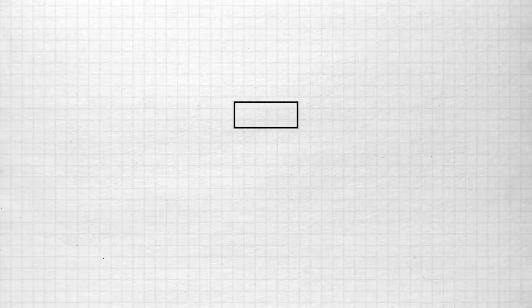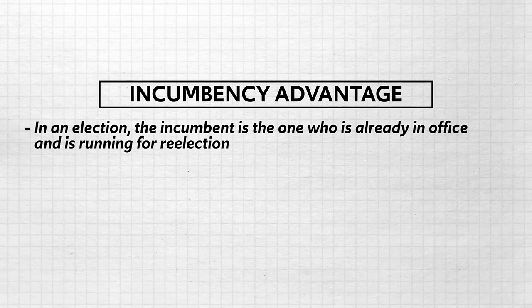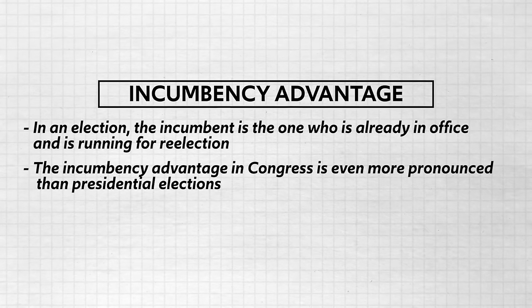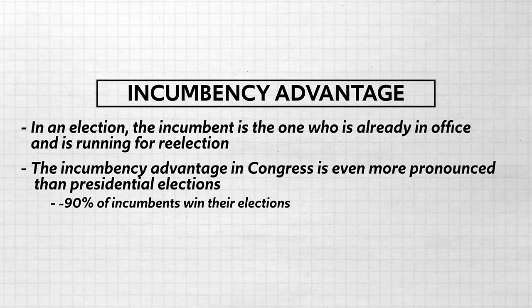The type of election influences how many people vote. Presidential Elections get the most voters into the voting booths. Congressional Elections get fewer voters out to the polls, but many of the same factors influence who gets elected to Congress and who gets elected President. The first factor is the Incumbency Advantage — the incumbent is the one who is already in office and running for re-election. The Incumbency Advantage in Congress is even more pronounced than in Presidential Elections, since something like 90% of incumbents win their elections.